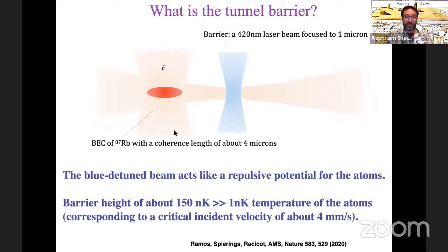We Bose condense the atoms inside a crossed dipole trap. And we're going to use this horizontal beam as a kind of waveguide to let the atoms keep moving in one dimension after we remove the other beam. So they'll cross this blue barrier while moving in one dimension. That blue barrier is adjusted to have a barrier height of about 150 nanokelvin, which may sound very small, but we've lowered the temperature of the atoms to one nanokelvin. And that 150 nanokelvin corresponds to an incident velocity of about four millimeters per second.